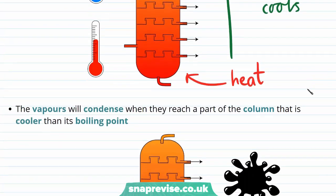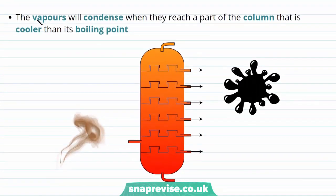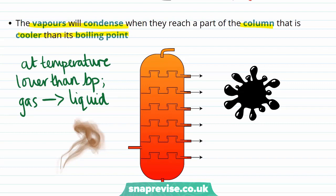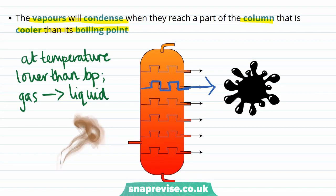The temperature difference between the top and the bottom of a fractioning column is significant, and is designed so that different vapours will condense when they reach the part of the column that is lower than their boiling point. For a substance at a temperature lower than its boiling point, it will undergo a state change from a gas back to a liquid — this is condensation. As vapours condense within the fractioning column, they fall onto trays which collect the liquid and channel it out of the column. The different components of the crude oil mixture will condense at different temperatures because they have different boiling points.